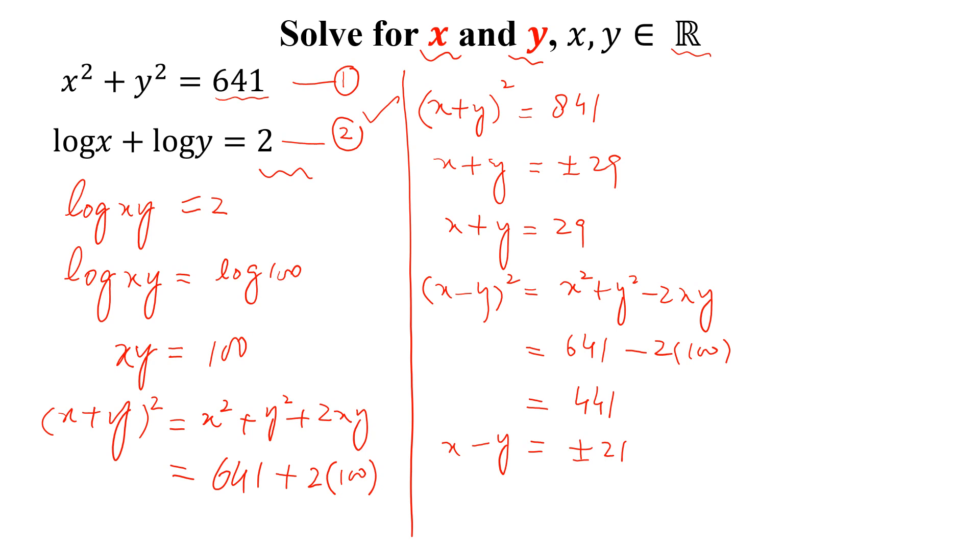Again we will choose the positive value, so x minus y equals 21. Now x plus y is equal to 29 and x minus y is equal to 21. By adding these two equations we can write 2x equal to 50, and from here we can write x equal to 25.